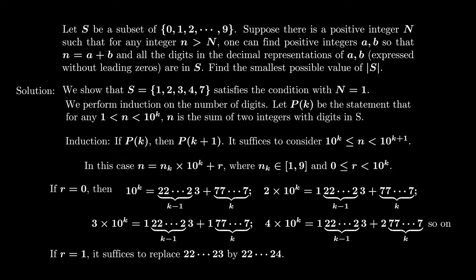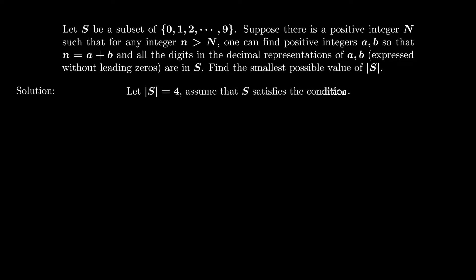Next, we show that the cardinality of S could not be smaller than 5. Otherwise, I take a subset of four numbers and consider the last digit of n. This implies that all the numbers between 0 and 9 must be the remainder of some numbers a plus b modulus 10.